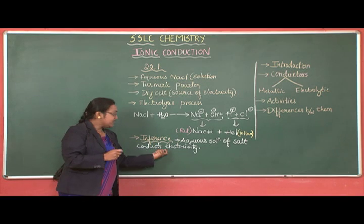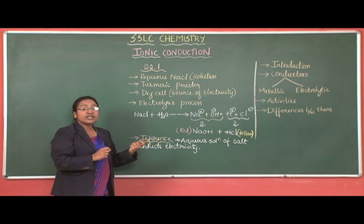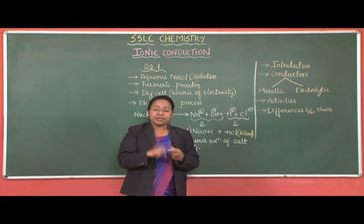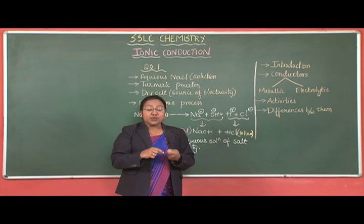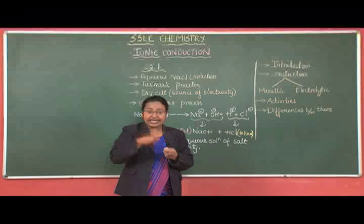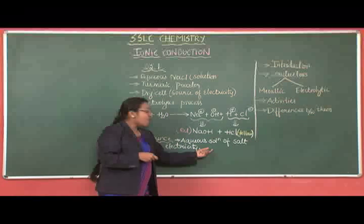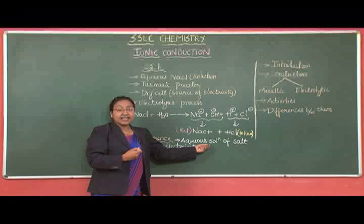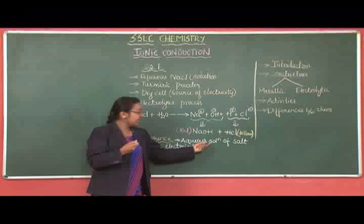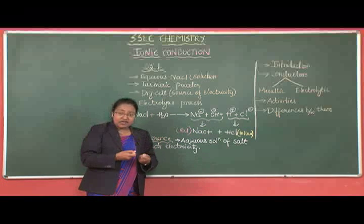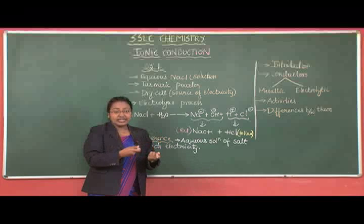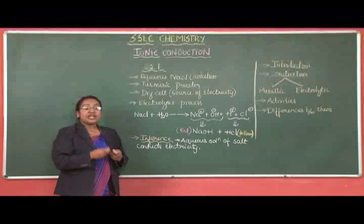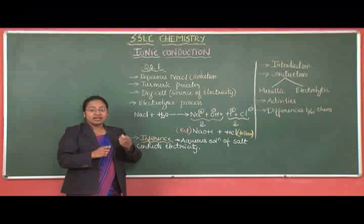The aqueous solution of a salt conducts electricity because of the flow of ions. The flow of ions determines the extent of current — their freedom of movement is directly proportional to the current they conduct. When ions are present and movement is observed, current is conducted. This is the inference drawn from Activity 22.1 in your textbook.